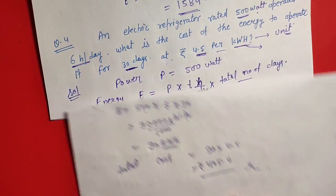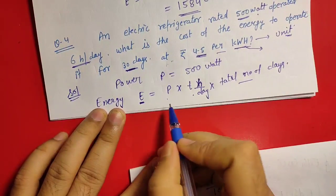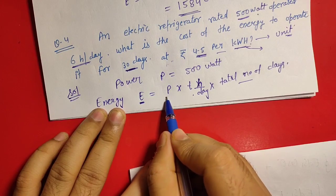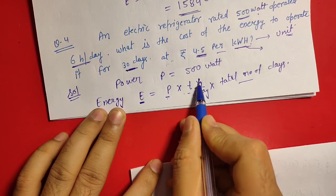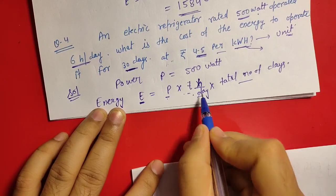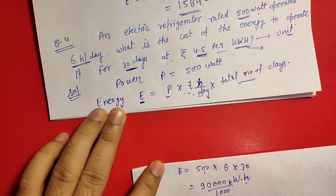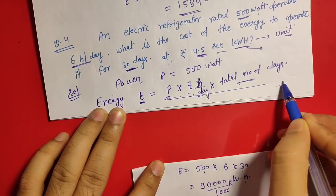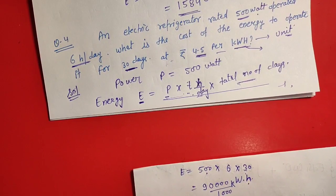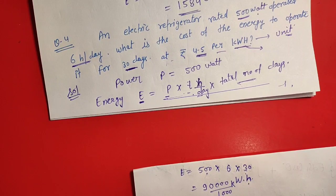It's a very simple question. Bas aapko yeh formula yaad rakhna ki total energy consumption kaise nikalna hai days ka, aur isko formula yaad: power into time, hours per day, time yaad rakhenge hours mein per day. Per day kitna hours usko operate kar rahe, aur total number of days, kitne days tak usko use kar rahe. Yeh formula use karke total energy nikal sakte kilowatt hours mein, aur isko phir kilowatt hours mein convert karne ke liye thousand se divide kar denge. Clear?